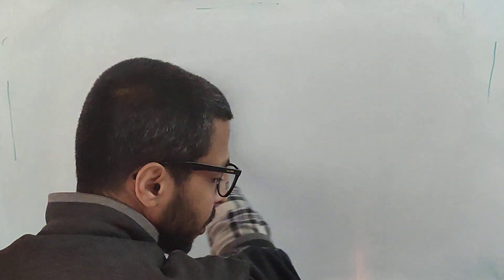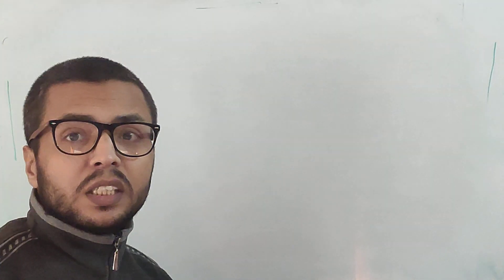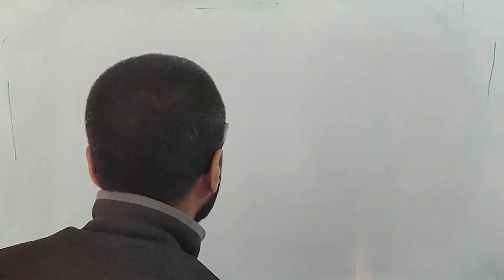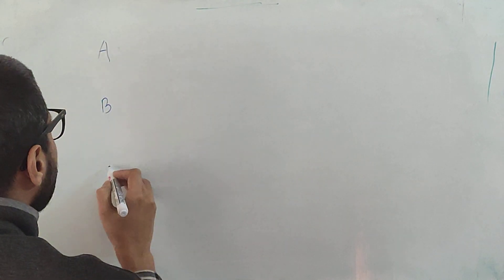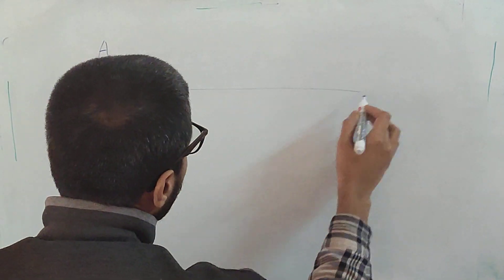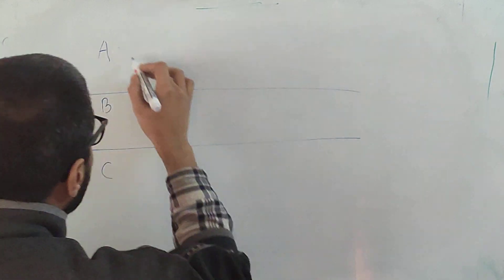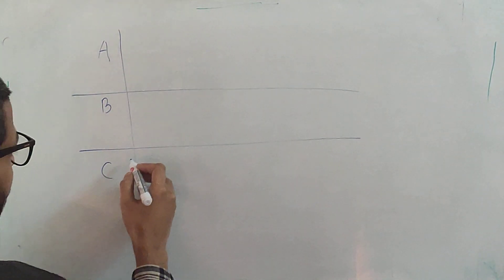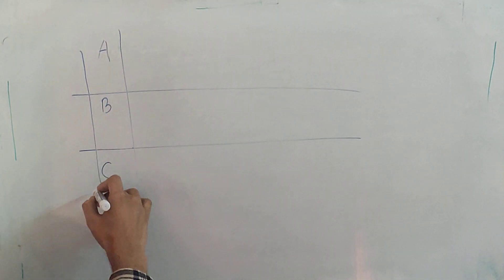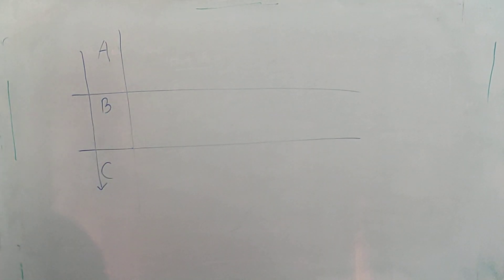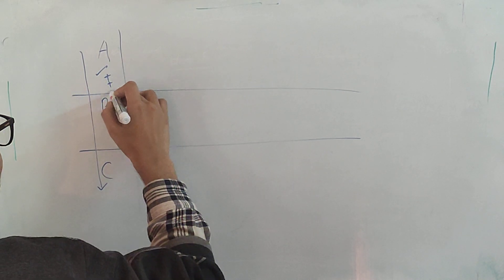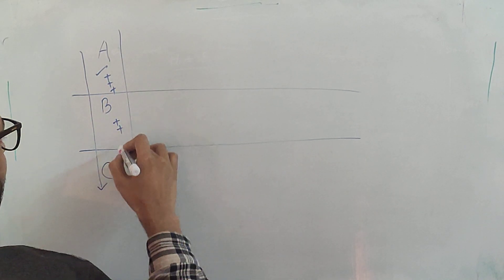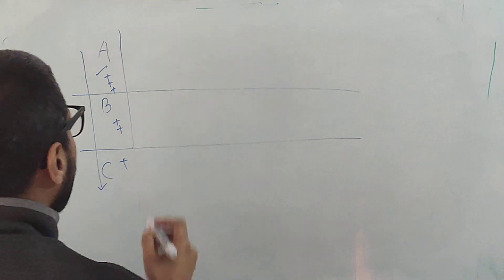The drugs used in MDR TB treatment are classified into three groups: Group A, Group B, and Group C. As you go down the groups, the effectiveness of these drugs decreases. Group A drugs are the most effective, then Group B, then Group C.